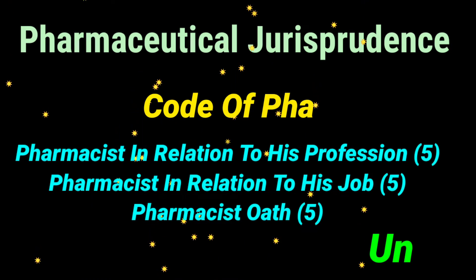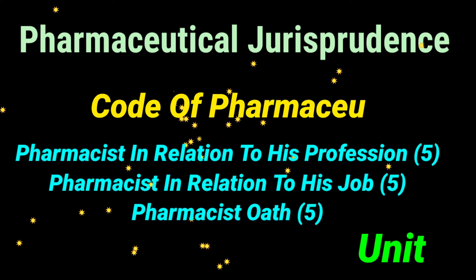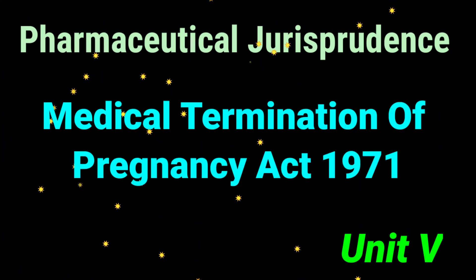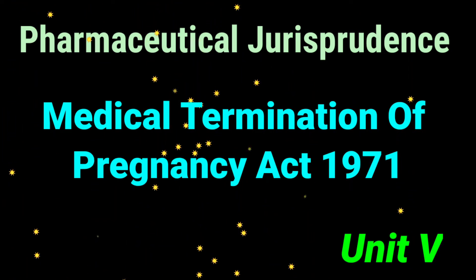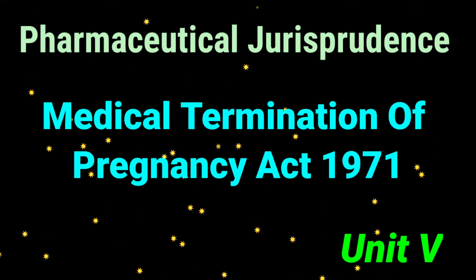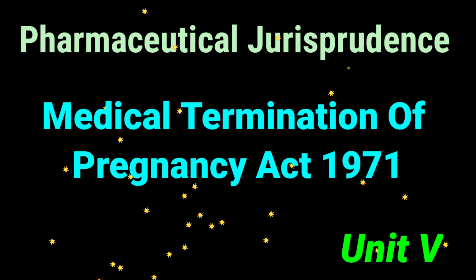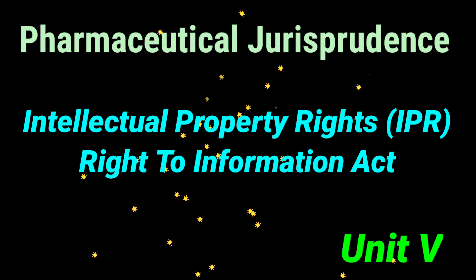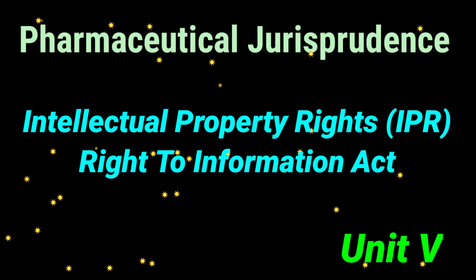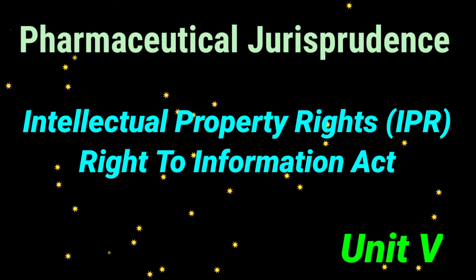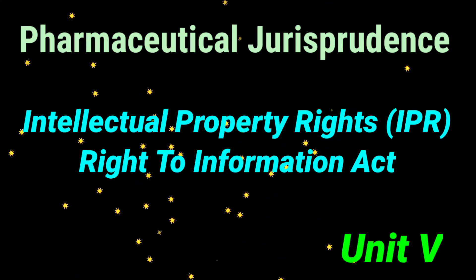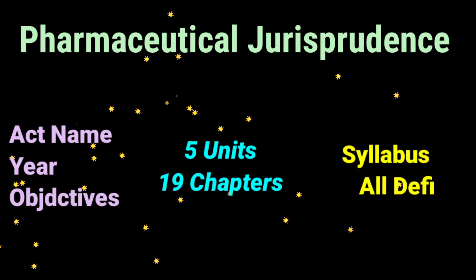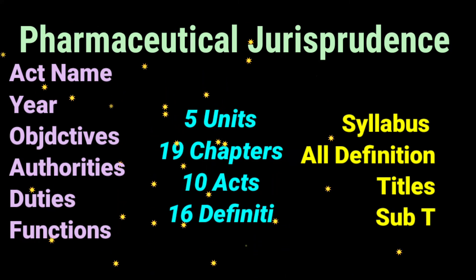Unit 5 covers the Code of Pharmaceutical Ethics, with important topics including: the pharmacist in relation to his profession, pharmacist in relation to his job, and the Pharmacist's Oath. The Medical Termination of Pregnancy Act — also called the Abortion Act 1971 — is a most important question. Other acts such as Intellectual Property Rights, the Right to Information Act, and pharmaceutical legislation in India must also be studied, including administrative authorities, duties, offenses, and penalties of all acts.